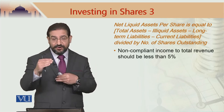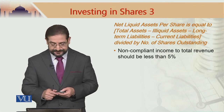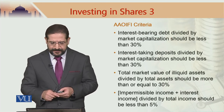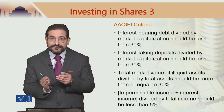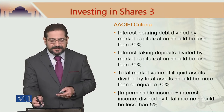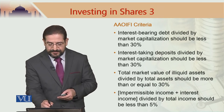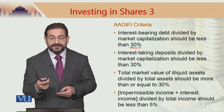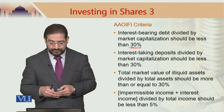By the way, there is a very long list of Sharia-compliant stocks listed on PSX. Now we go to AOIFE criteria. AOIFE criteria is in the form of a Sharia standard. Interest-bearing debt divided by market capitalization should be less than 30%. So they are a bit more conservative — the other ones were at 33%, and they have reduced it to 30%.